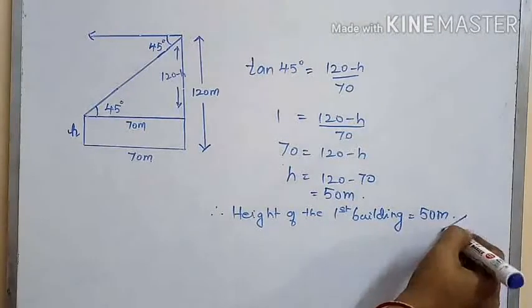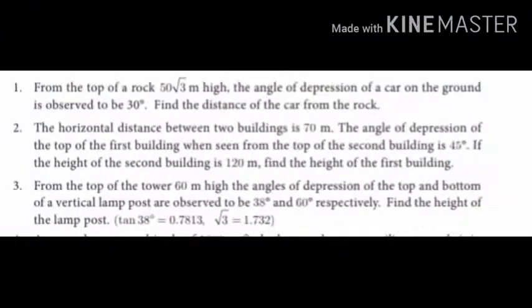The next problem: From the top of a tower 60 meters high, the angles of depression of the top and bottom of a vertical lamp post are observed to be 38 degrees and 60 degrees respectively. Find the height of the lamp post. Given that tan 38 = 0.7813 and √3 = 1.732.